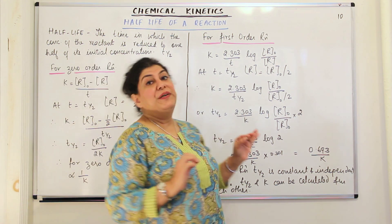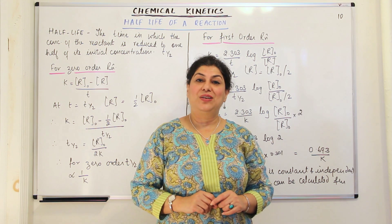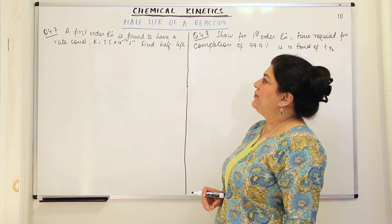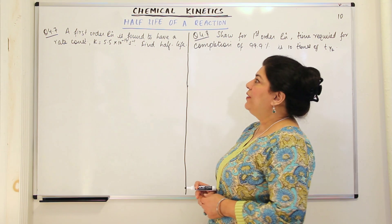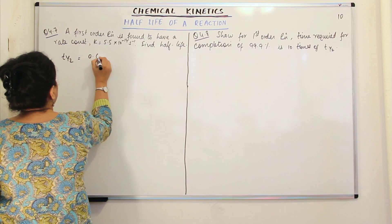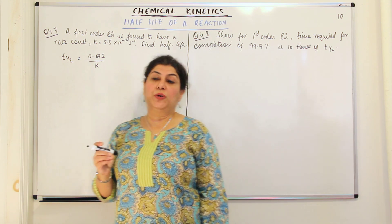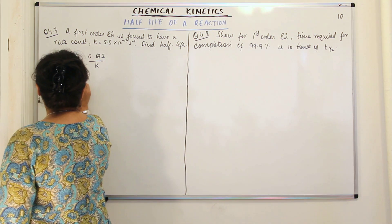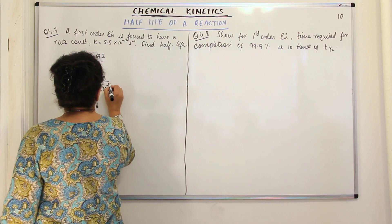Now I have solved two solved examples from your textbook. Question 4.7: A first-order reaction is found to have a rate constant K equal to 5.5 × 10⁻¹⁴ per second. You have to find the half-life of the reaction. We know that T½ = 0.693/K. So T½ = 0.693 divided by 5.5 × 10⁻¹⁴ per second.